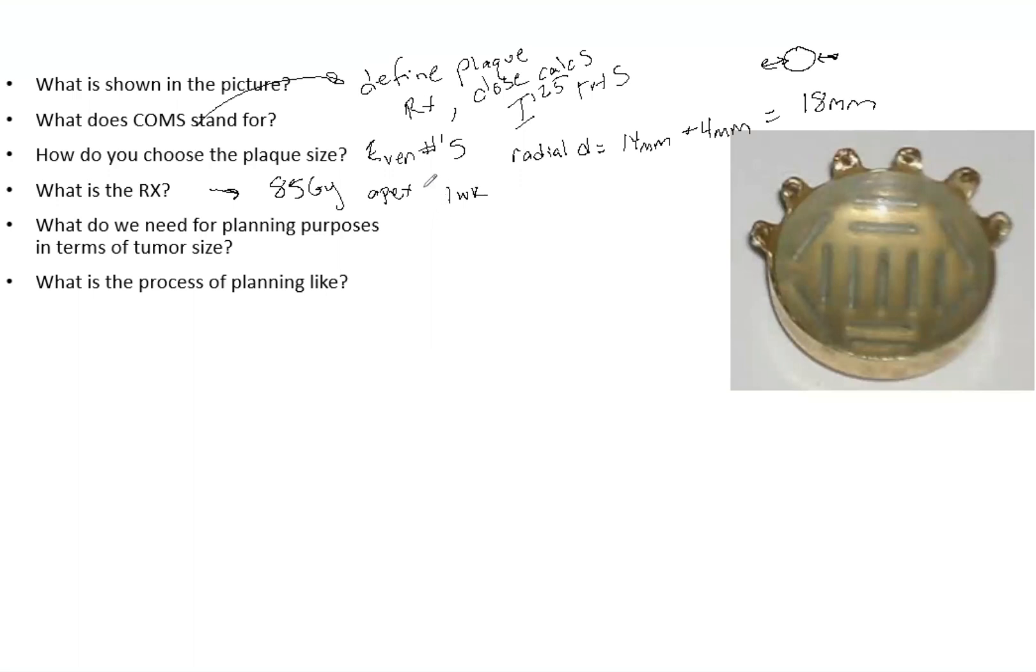For planning purposes, what do you need to know about the tumor size? In order to get the plaque size and do the planning, you need the radial, the circumferential, and the height of the melanoma on the eye. You need all three things to determine both your planning and the plaque size.